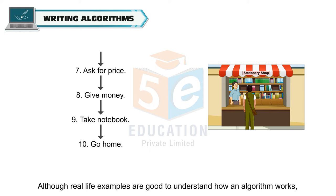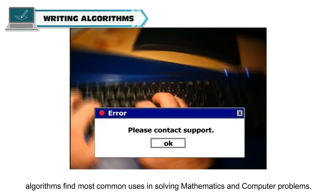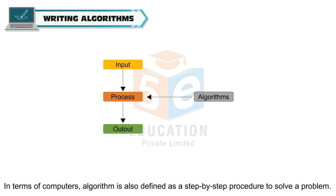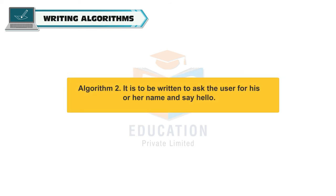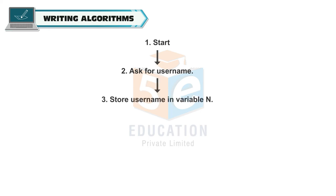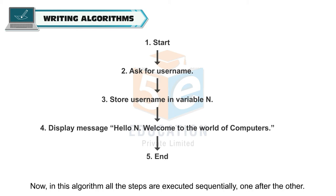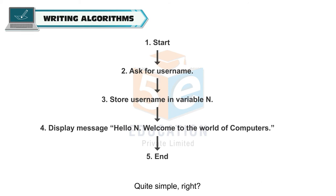Although real-life examples are good to understand how an algorithm works, algorithms find most common uses in solving mathematics and computer problems. In terms of computers, an algorithm is also defined as a step-by-step procedure to solve a problem. Algorithm 2 is to ask the user for his or her name and say hello. Start, ask for username, store username in variable n, display message 'Hello n, welcome to the world of computers', end. All the steps are executed sequentially, one after the other.